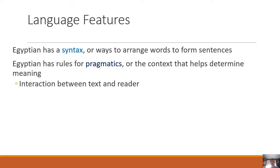Egyptian, just like every other language, has what's called pragmatics — the context that helps determine meaning. It's an interaction between the text and the reader. Cultures don't feel the need to spell out every single thing because everyone in that culture already knows it. So if I walked into ancient Egypt and said 'what's up?' — they'd have no context for that. The interaction would be fraught with difficulty because the pragmatics of my knowledge don't line up with their ways of greeting and understanding each other.